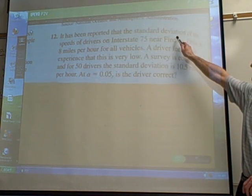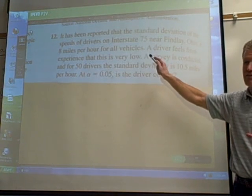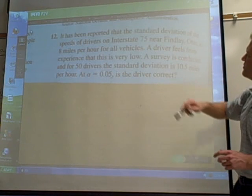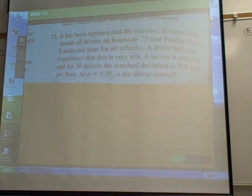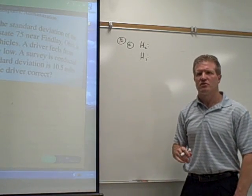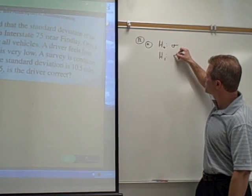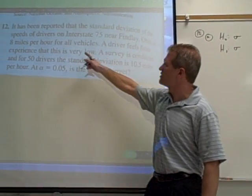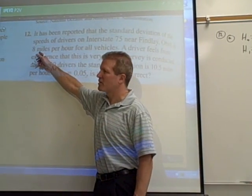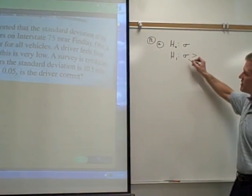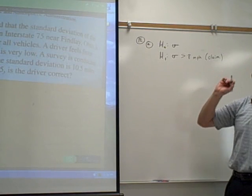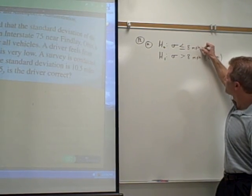So the report is about a standard deviation, but the driver is claiming that that's too low. I think the way I interpreted this is that the driver is making a claim that he thinks the standard deviation is actually higher than what was reported. So to start this problem off, step A, we're going to write our null and our alternative hypotheses. The population standard deviation symbol is sigma. Now, it says it's reported as 8 miles per hour. He thinks it's too low. So this driver thinks it's actually bigger than 8. So we're going to say that the claim is that the population standard deviation is greater than 8 miles per hour. The null would be that's less than or equal to 8 miles per hour.